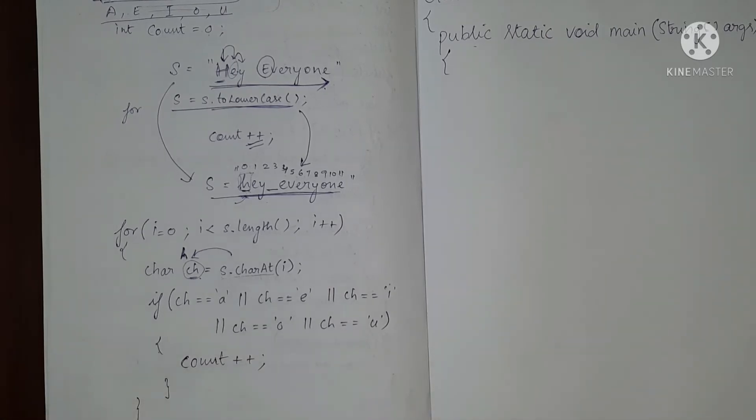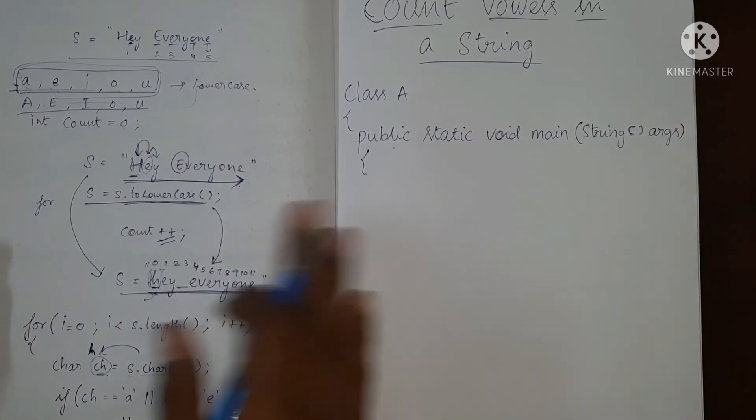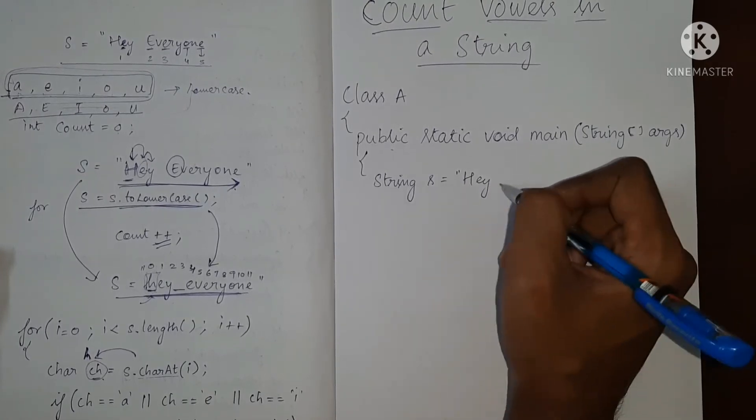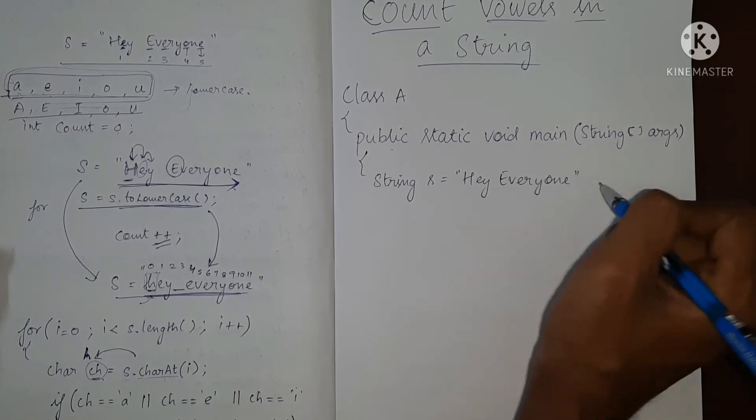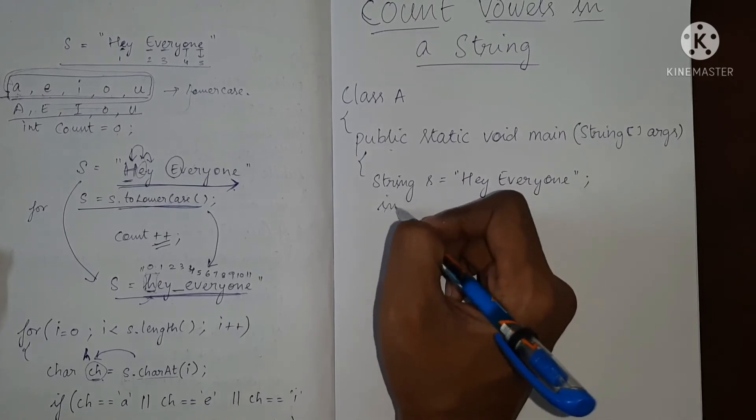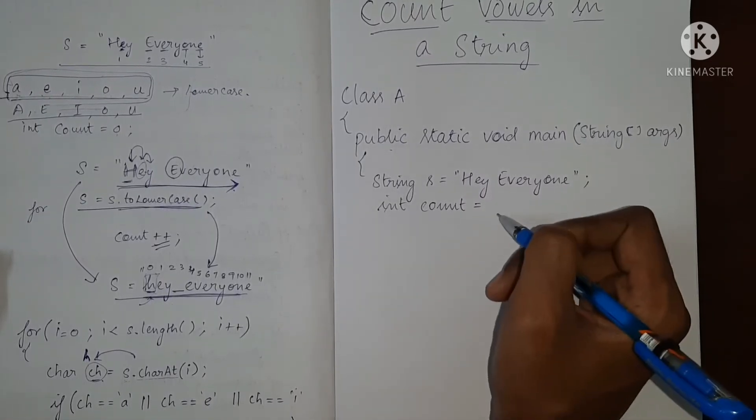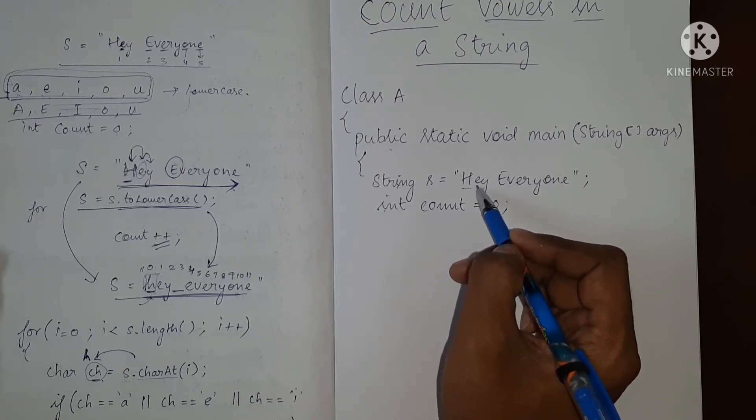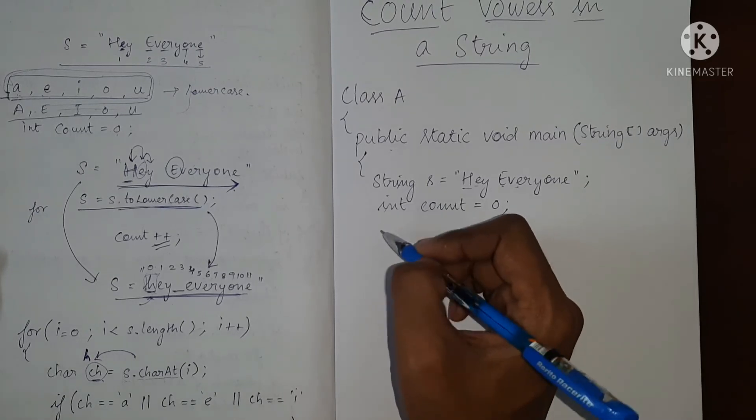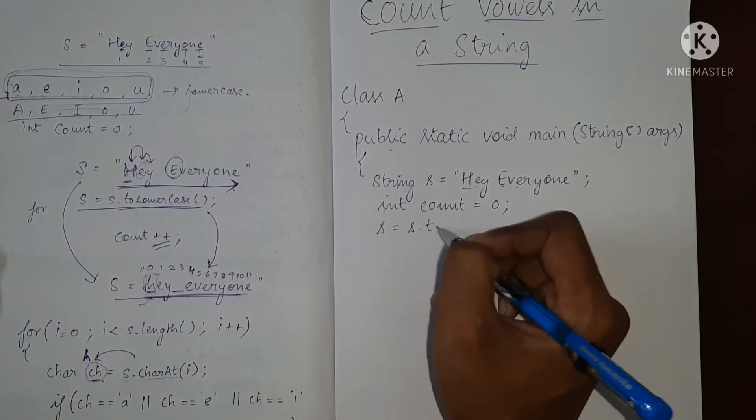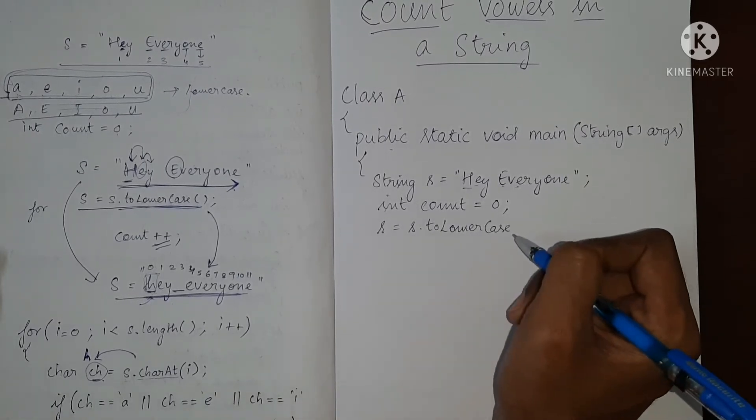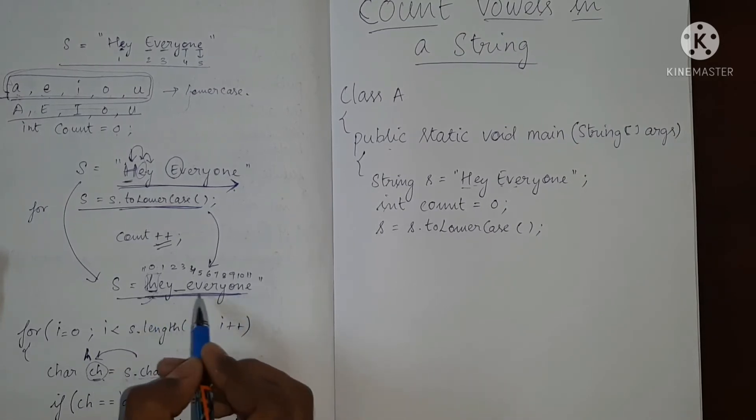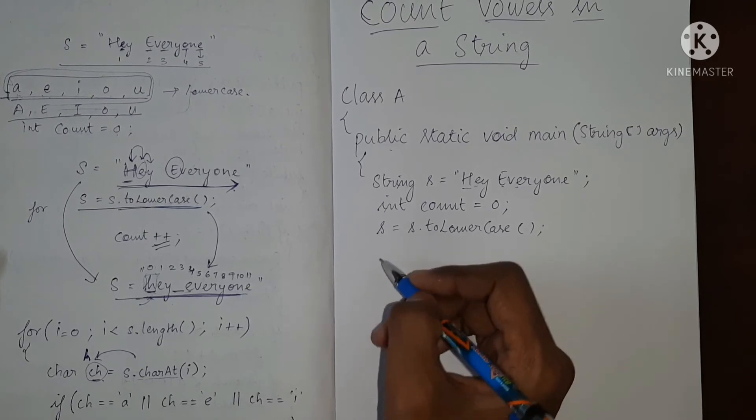So this is the for loop. So let me write the program over here. We have string S as hey everyone. We have a variable to count the number of vowels. It is count and it is initially zero. So as I have already told there are chances that there will be a mix of upper and lower case characters in the string. So simply we are going to change that S into lower case. So we are using inbuilt method to lower case. Now this S has been converted into lower case as I have explained. So every character this H and this E which was upper case will now become lower case. Now we will go to the for loop.